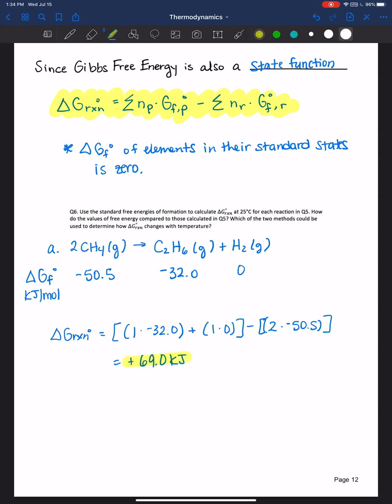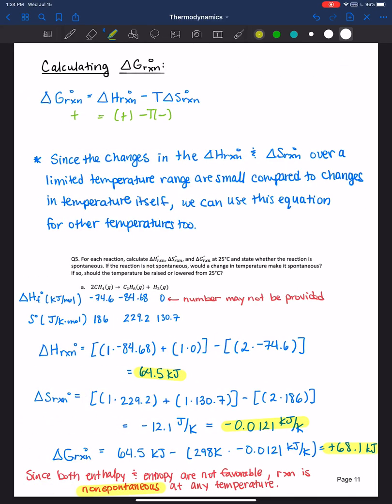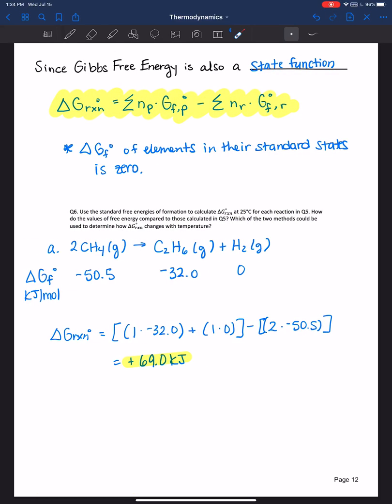We essentially got the same answer as we did when we used this equation of delta H minus T delta S. You may be looking at it and say, it's a lot more work to do delta H minus T delta S versus just doing products minus reactants. Why wouldn't you just use this equation the entire time?